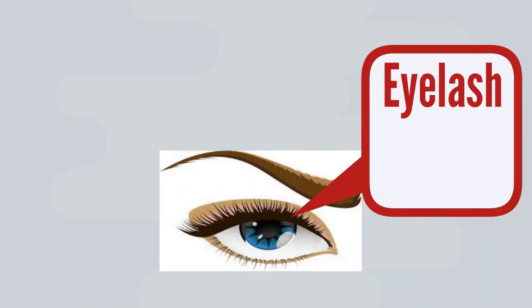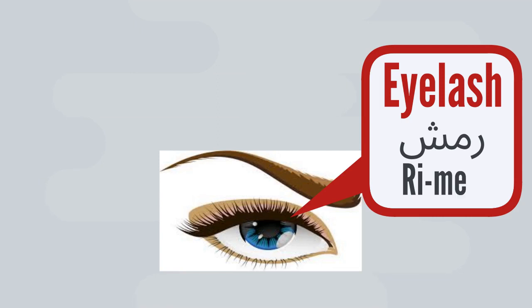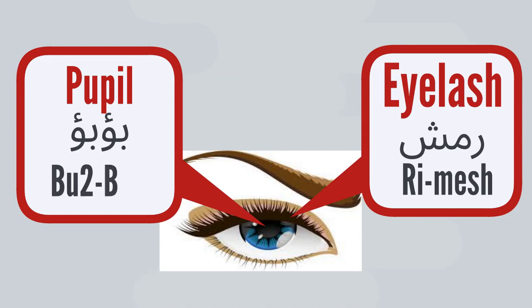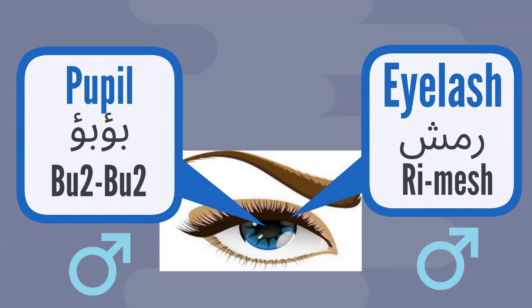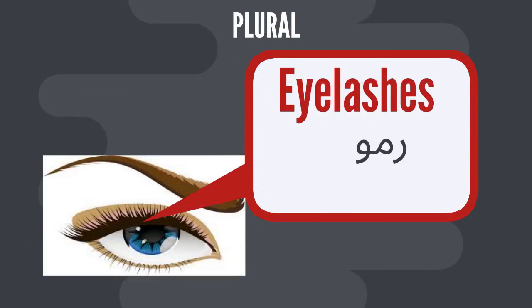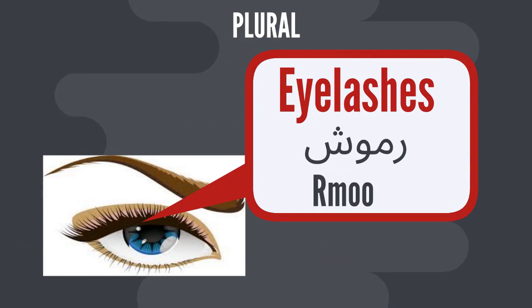Next is eyelash — rīmish. And pupil — būbū. That's kind of a funny word. Both are male nouns as well, so we say hādā rīmish and hādā būbū. The plural form for eyelashes is rūmūš.